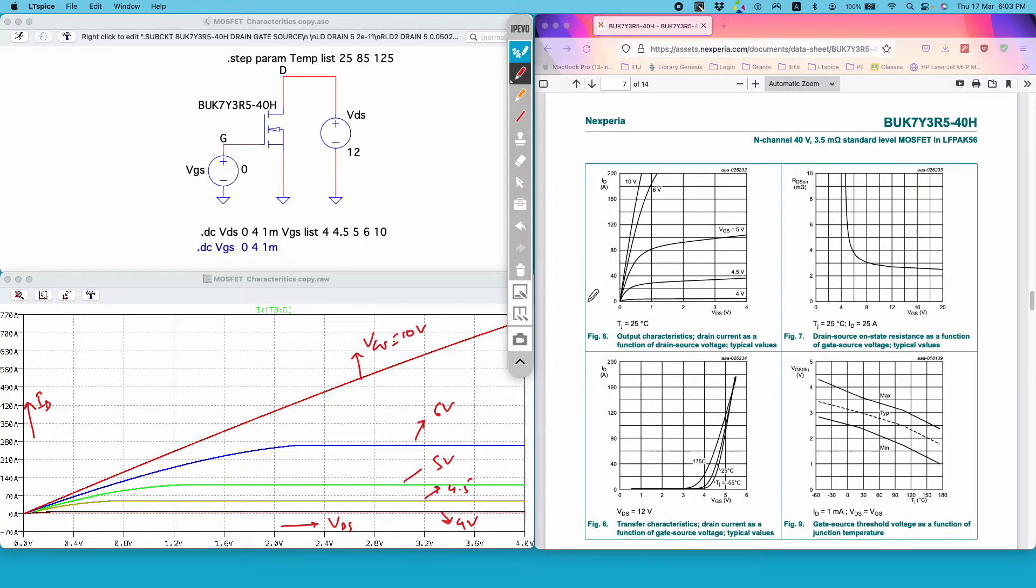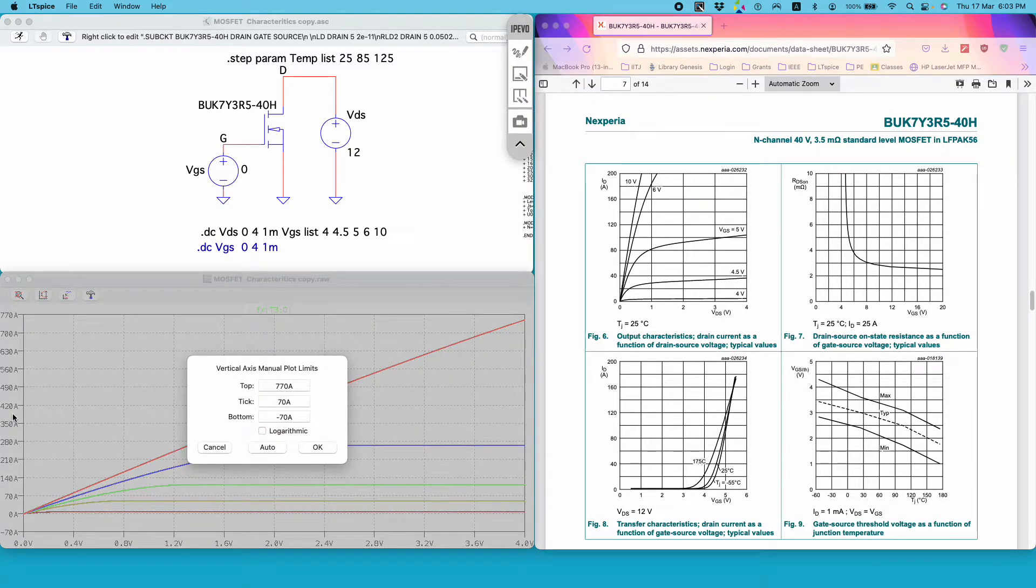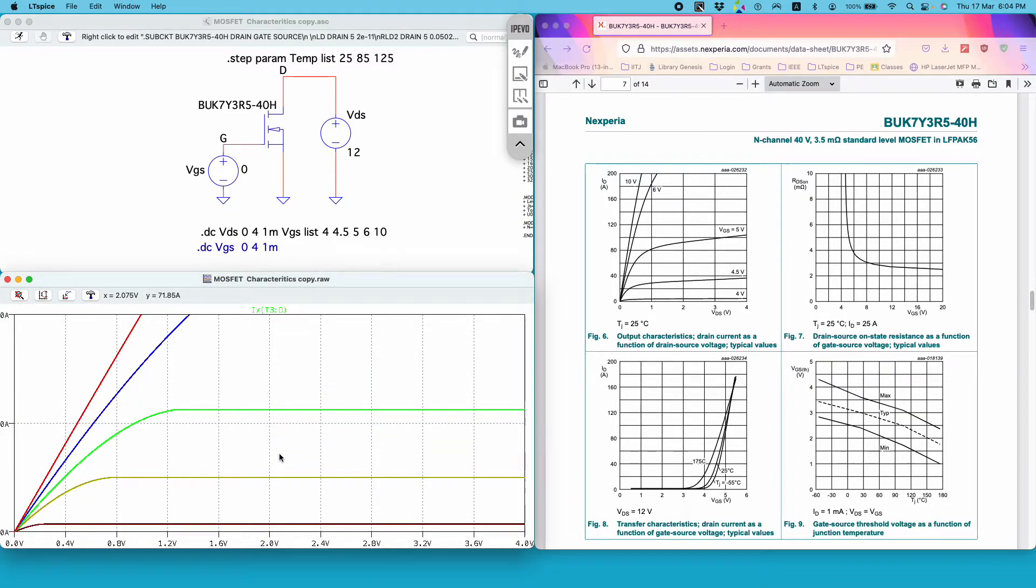One thing is that this data sheet shows the maximum drain current to be 200 amps. So to match that you just need to adjust the setting here on the y-axis. So you make it maximum 200 amps and you can start from 0 amps.